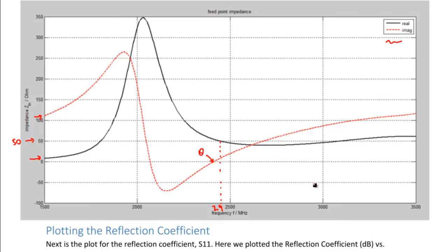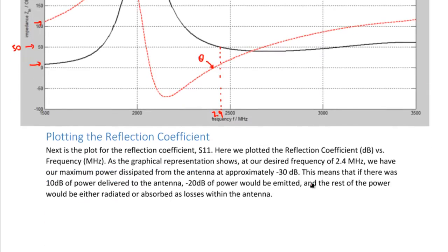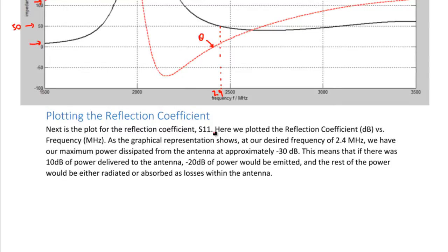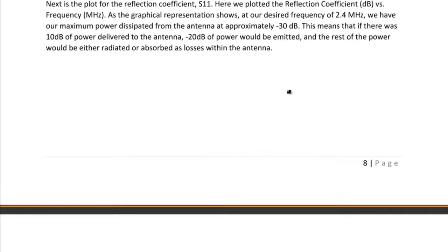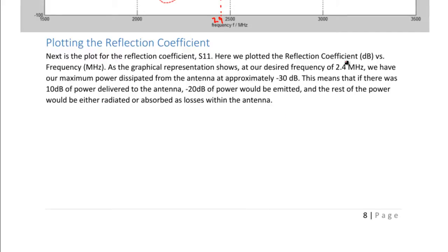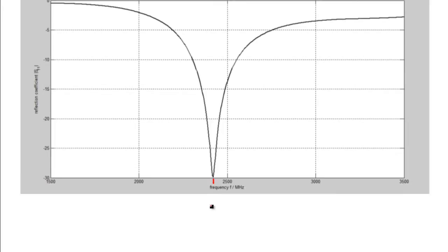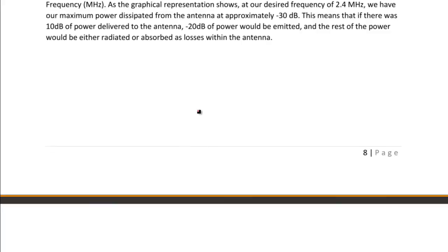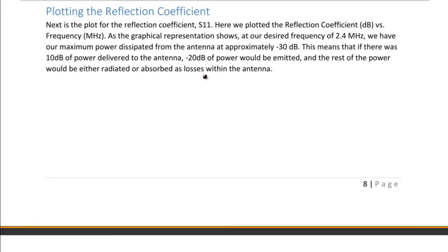Now, let's move on into plotting the reflection coefficient. So that's also known as the S parameter S11. So here in the graph below that I'll show in a second, we plot the reflection coefficient in decibels versus the frequency in MHz. So as the graph will show, at our desired frequency of about 2.4 GHz, you can see that the reflection coefficient is at its maximum of negative 30 decibels. So that means that if you have 10 decibels of power put into the antenna, negative 20 would be radiated, and negative 10 would be stored in the antenna as losses, or absorbed or radiated as losses.